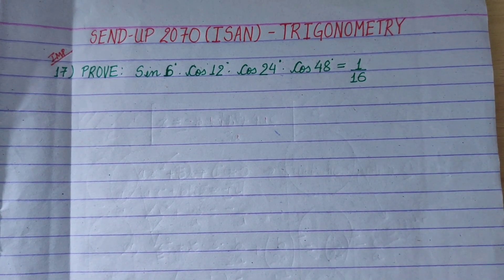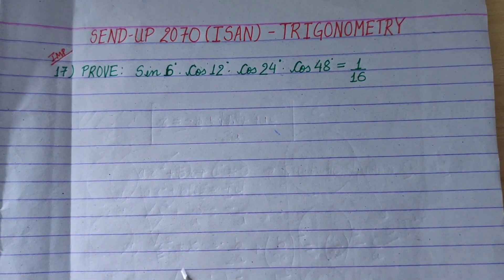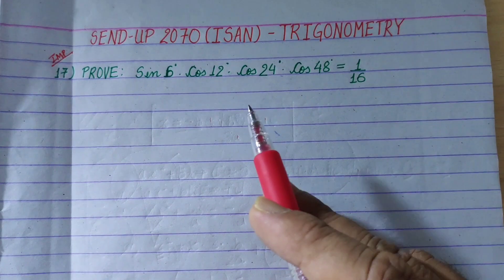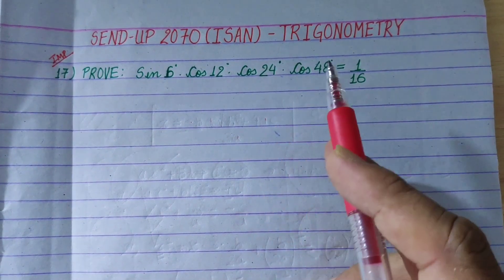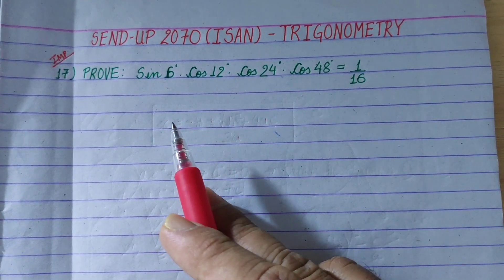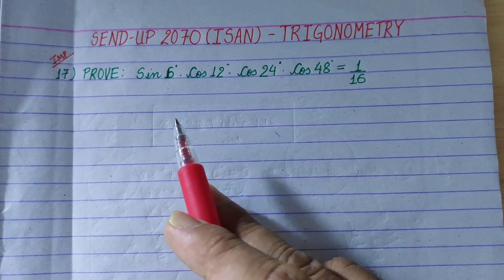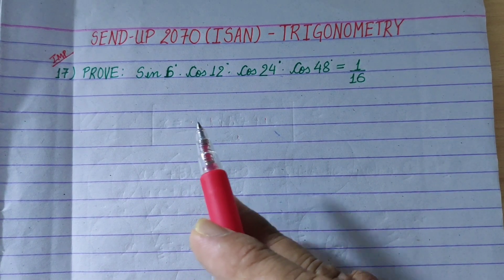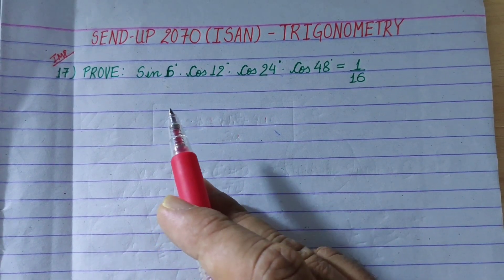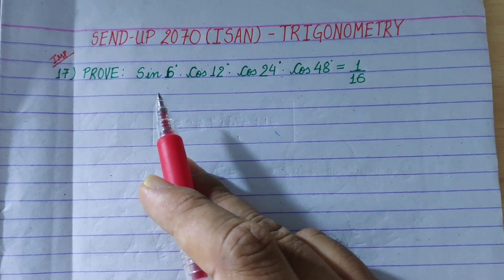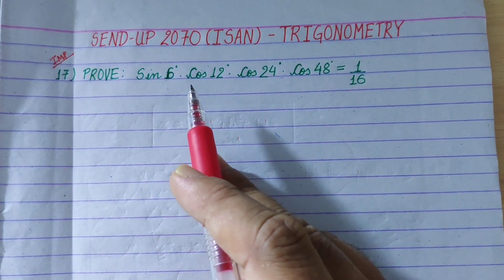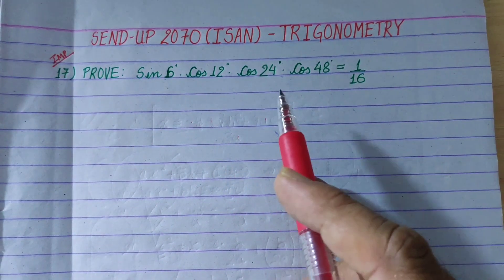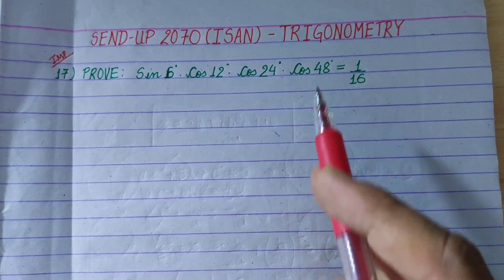Hi everyone. Today I am going to show you an important proof in trigonometry. I am going to prove that sin 6° times cos 12° times cos 24° times cos 48° equals 1 by 16.